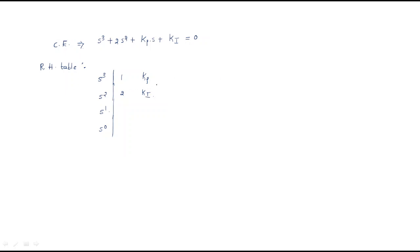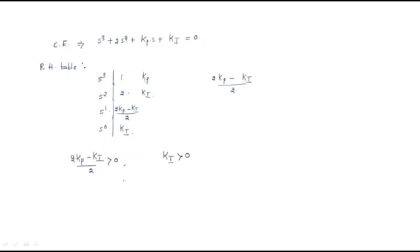The s-power-1 entry is (2·Kp − 1·Ki) / 2 = (2Kp − Ki) / 2. The s-power-0 entry is Ki. For stability, all first-column elements must be positive: 1 and 2 are already positive, so we need (2Kp − Ki)/2 > 0 and Ki > 0.